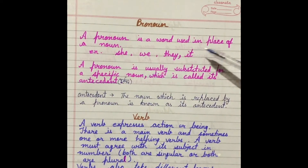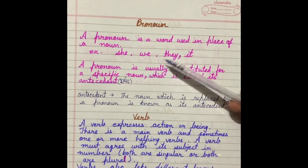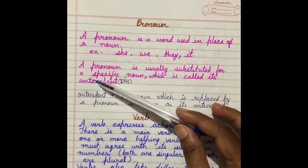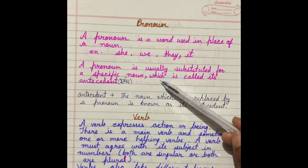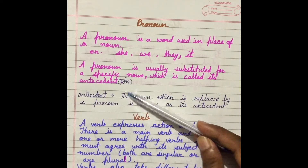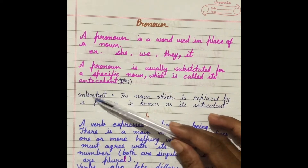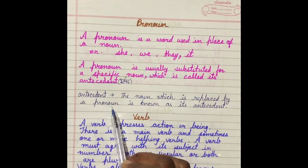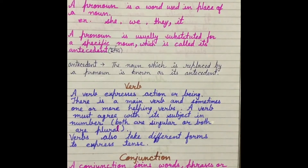Pronoun. A pronoun is a word used in place of a noun. Pronoun aisa word hota hai jo noun ki place par use kiya jaata hai. Like: she, we, they, and it. A pronoun is usually substituted for a specific noun, which is called its antecedent. Jis noun ki place par ise use kiya jaata hai, use antecedent kaha jaata hai. The noun which is replaced by a pronoun is known as its antecedent.